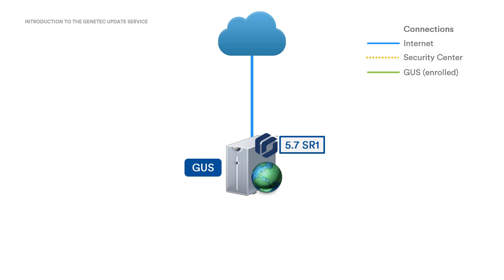GUS will check for any updates at regular intervals, can be configured to download updates in the background for manual installation later on, and allows you to view when the last check occurred. Additionally, for subscription systems only, GUS automatically refreshes the license in the background to ensure it is valid and the expiration date is current.